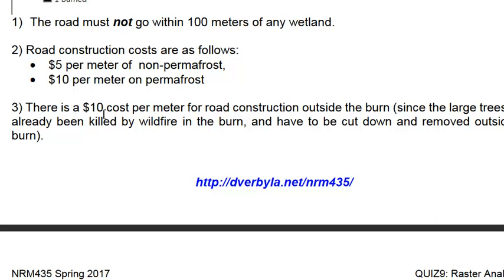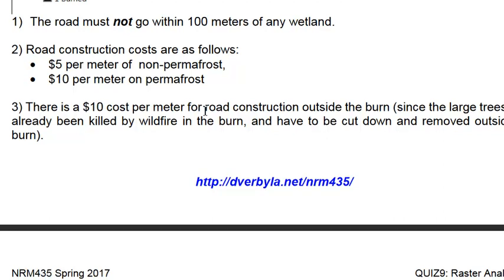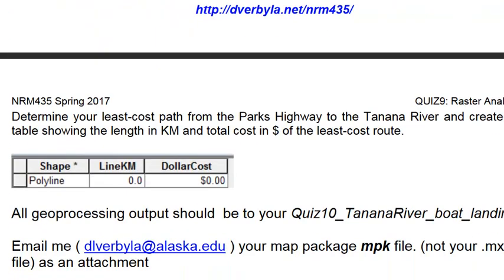There is also a $10 cost per meter of road construction outside the burn, since large trees have already been killed by wildfire inside the burn, giving us a discount for building inside it. So what we want to do is determine the least cost path from the Parks Highway to the Tanana River, and create a table showing the length of that least cost path and its estimated dollar cost.